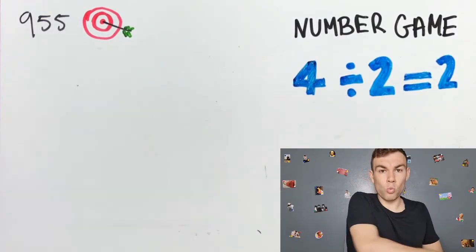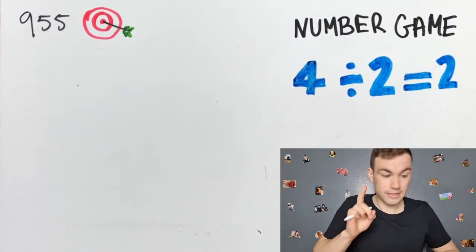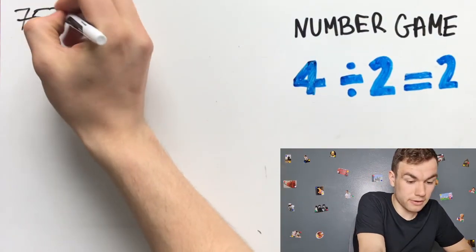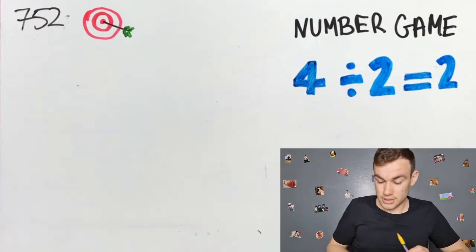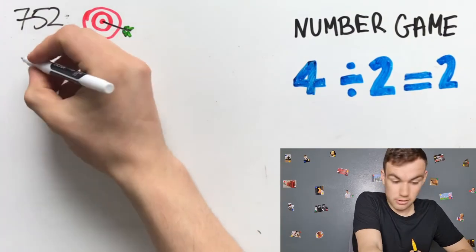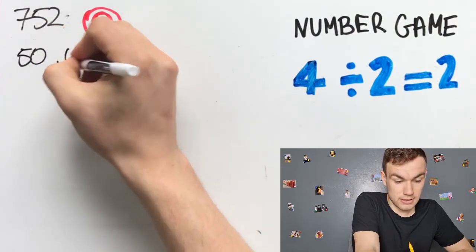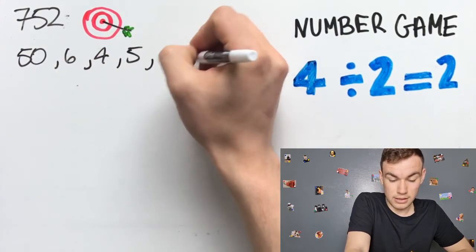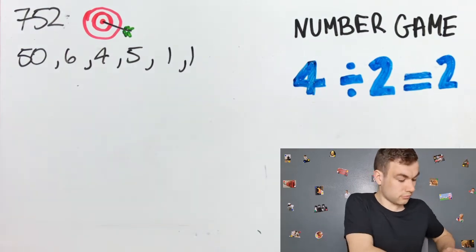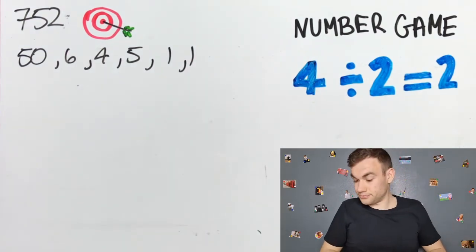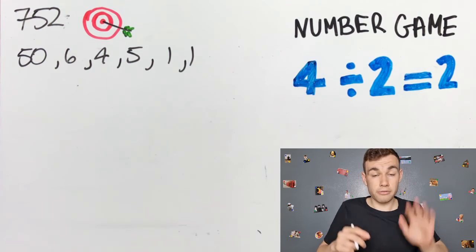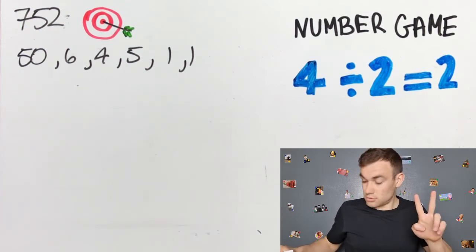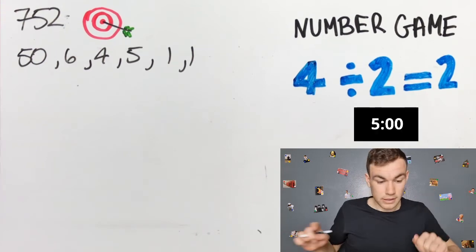That was hard. I am going to try one more. This time our target is 752 and our six smaller numbers are 50, 6, 4, 5, 1 and 1. When you are ready our five minutes begins in 3, 2, 1, let's go.